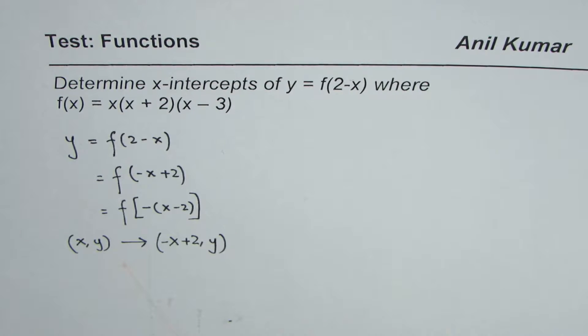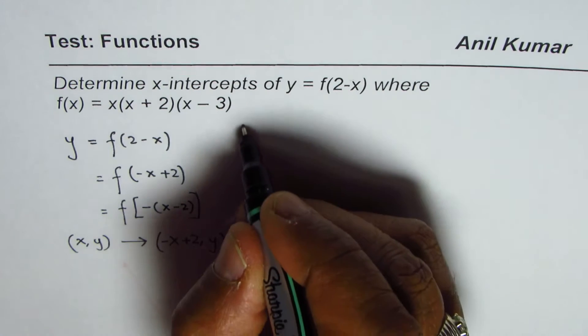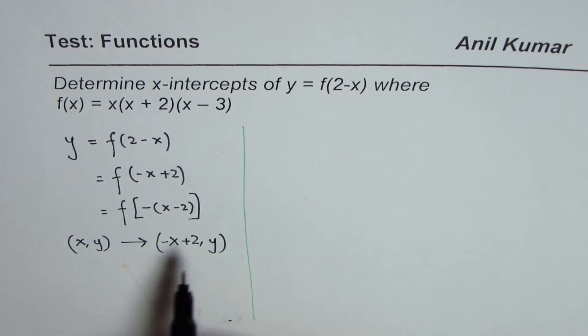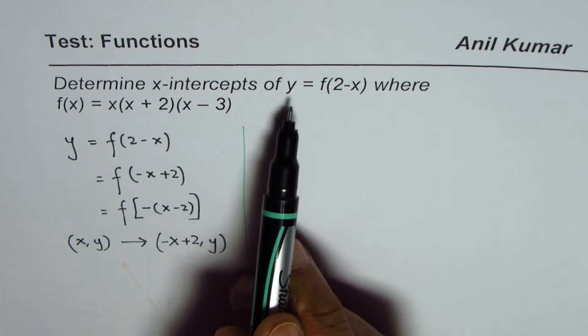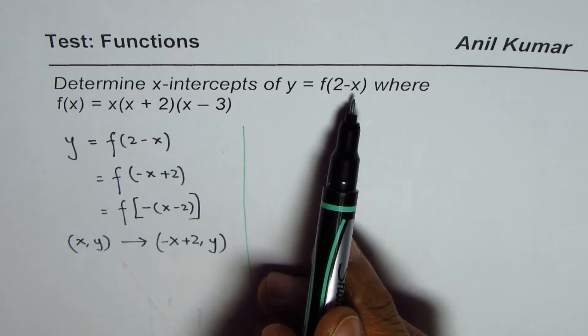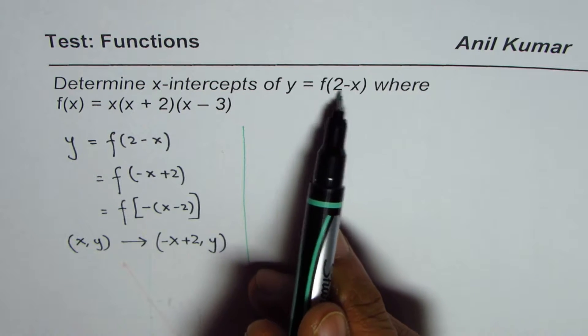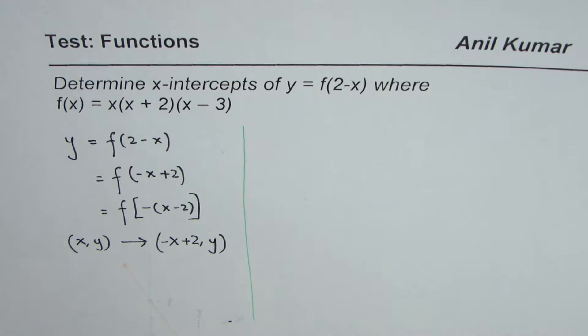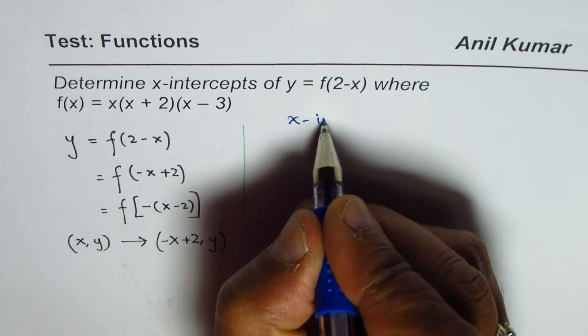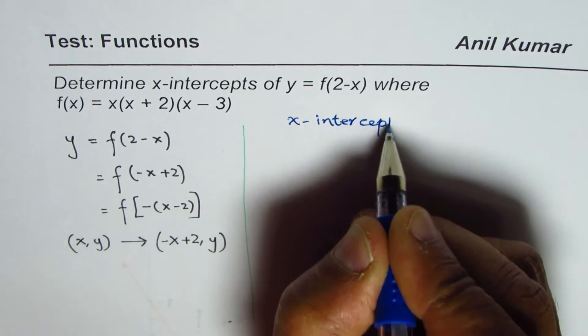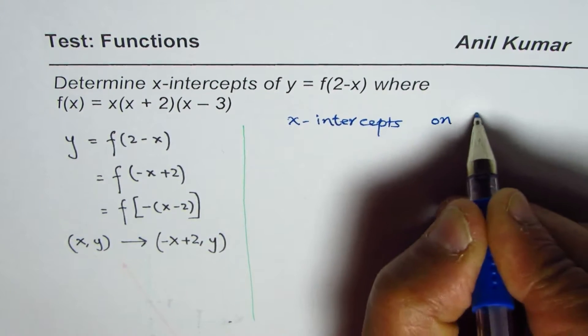Now, this transformation clearly indicates that the x-intercepts on the function remains x-intercepts on the transformed function given to us, y equals f of 2 minus x. However, their position changes. So therefore, we will now find the x-intercepts on the function f of x.